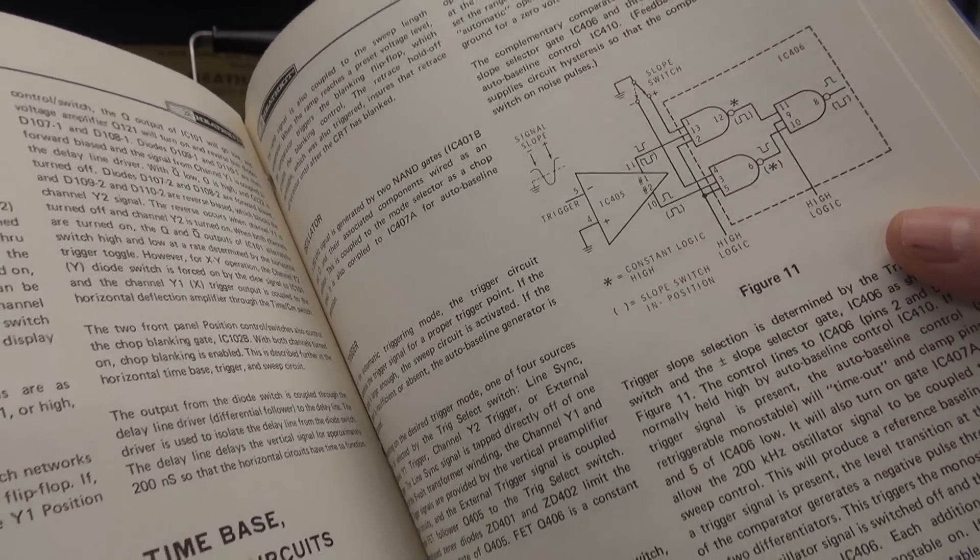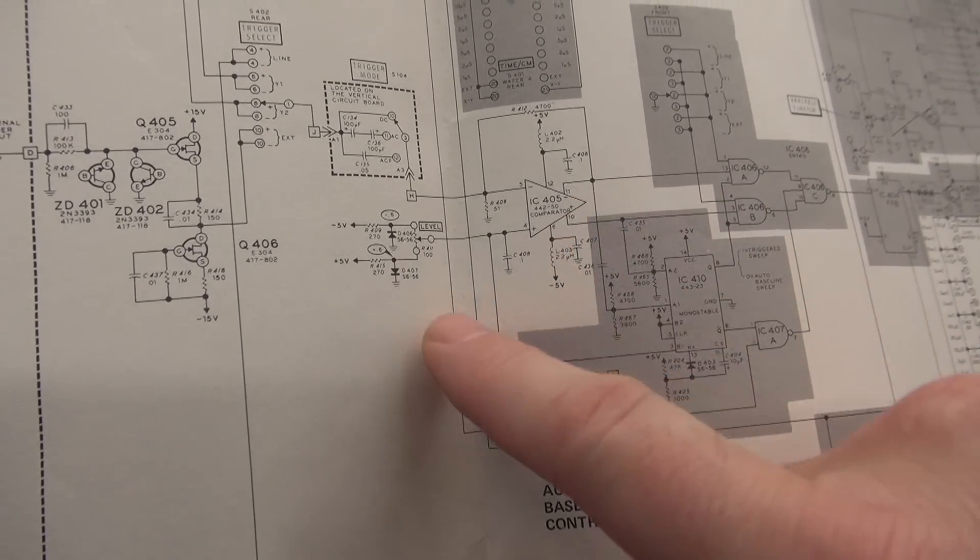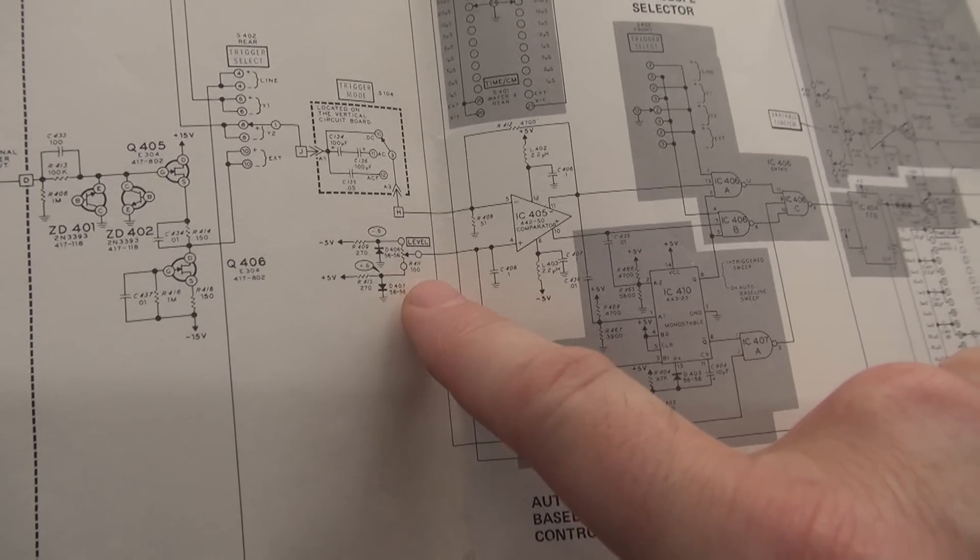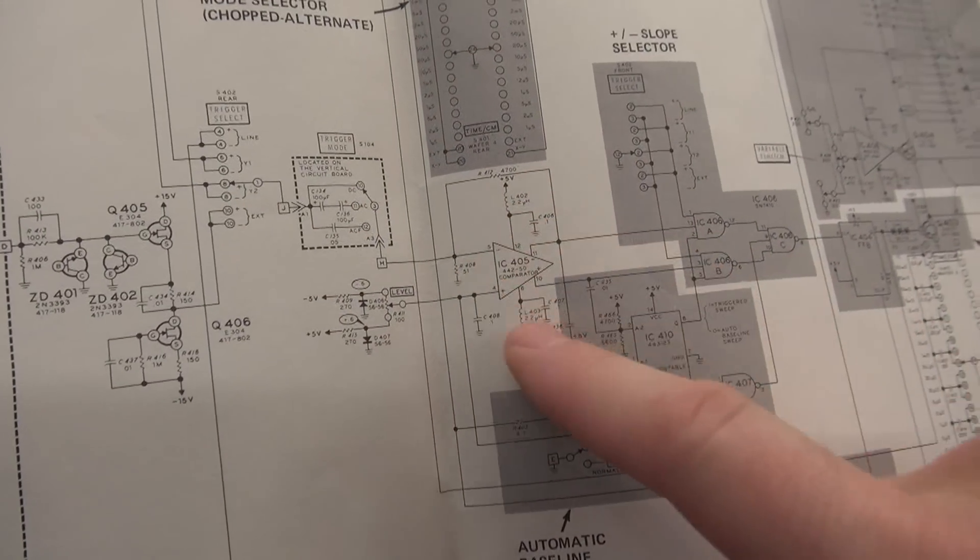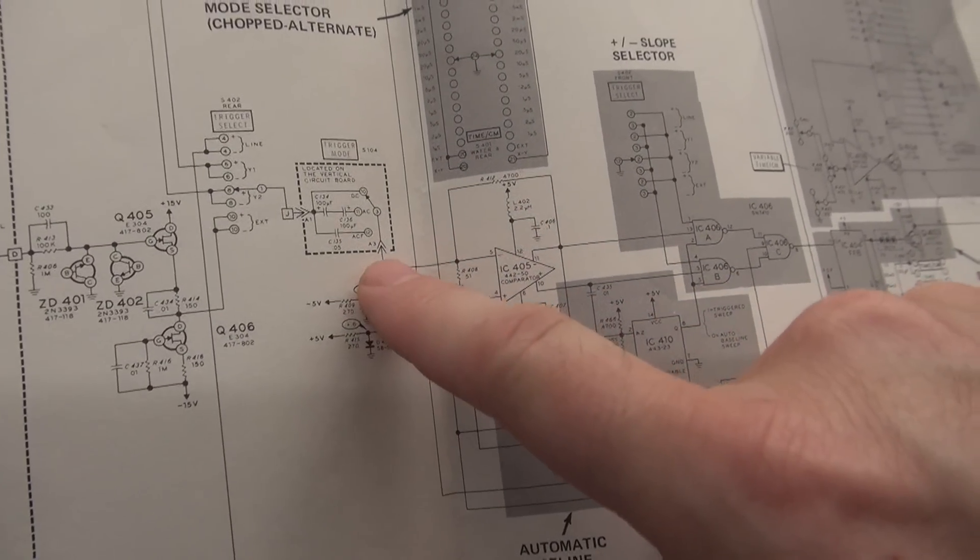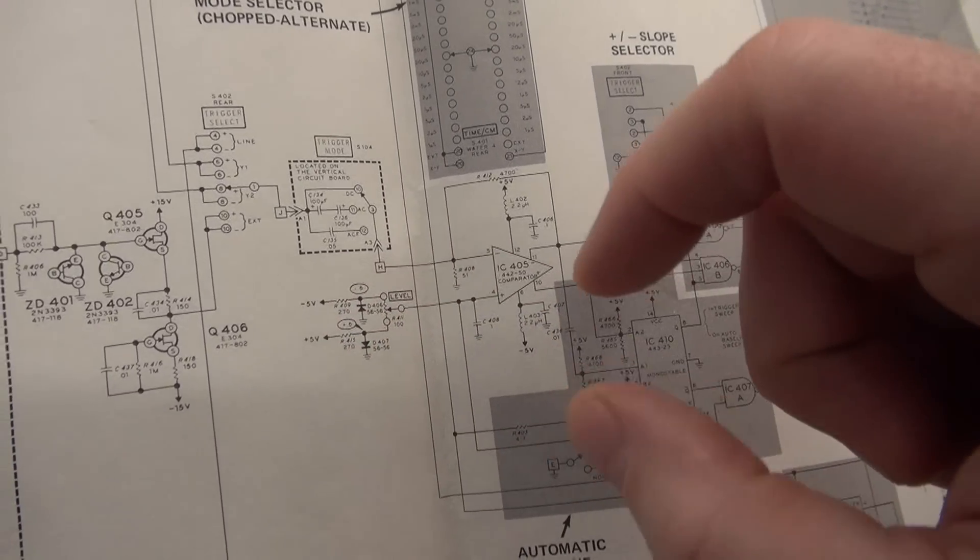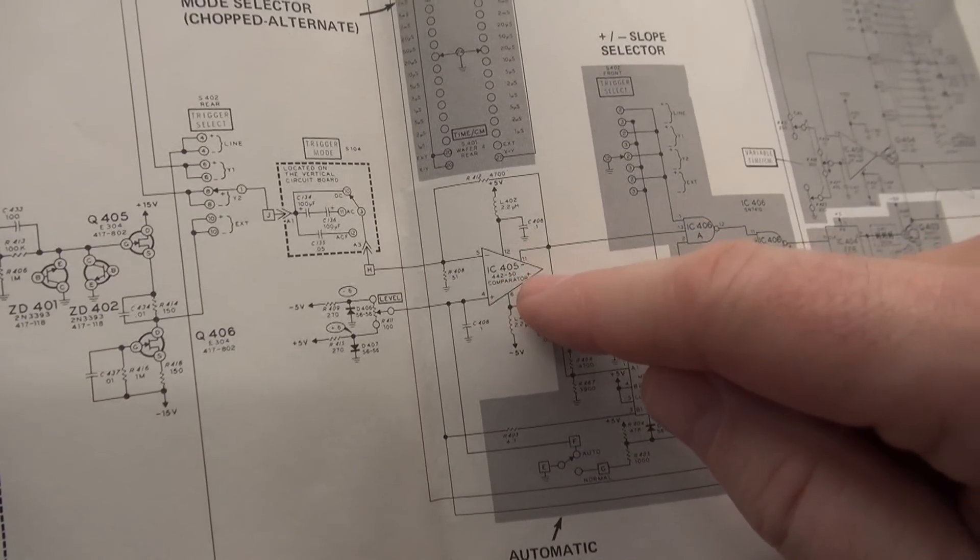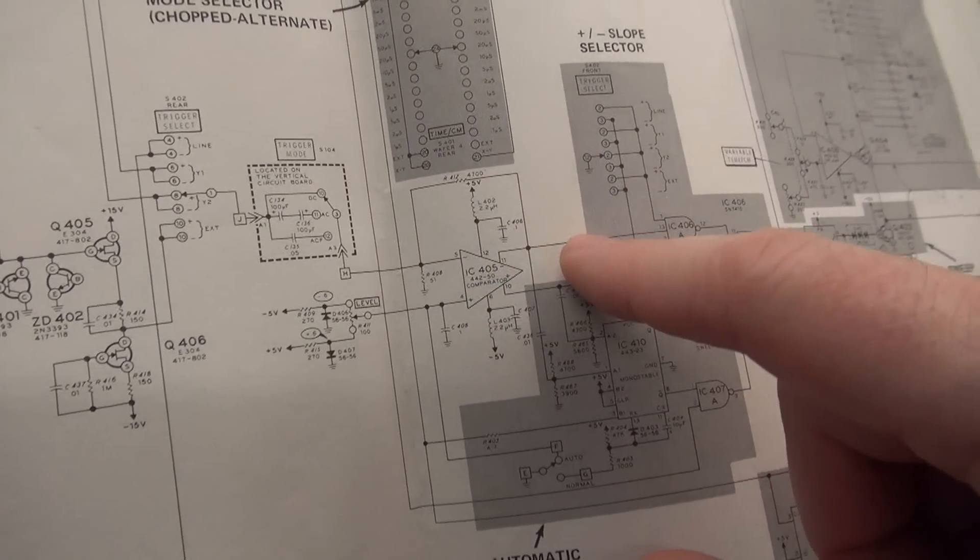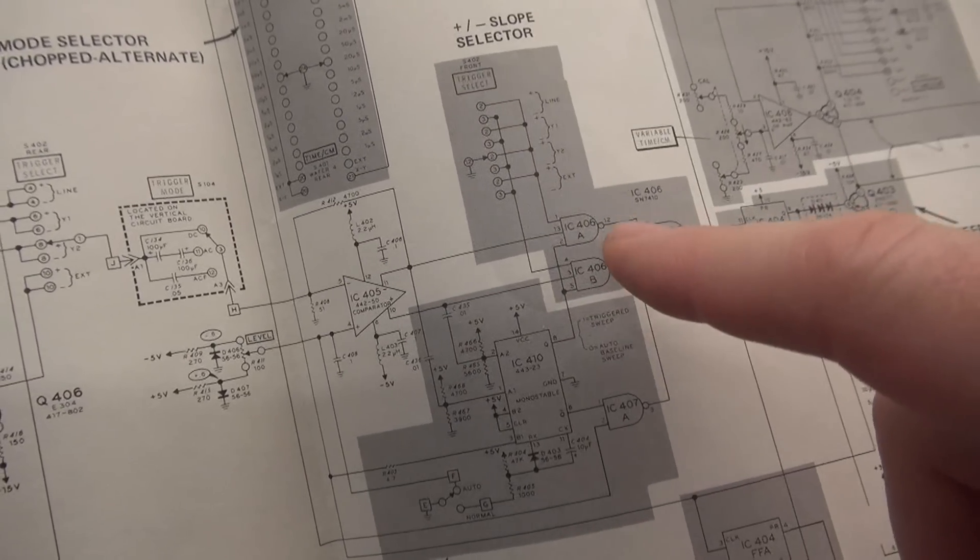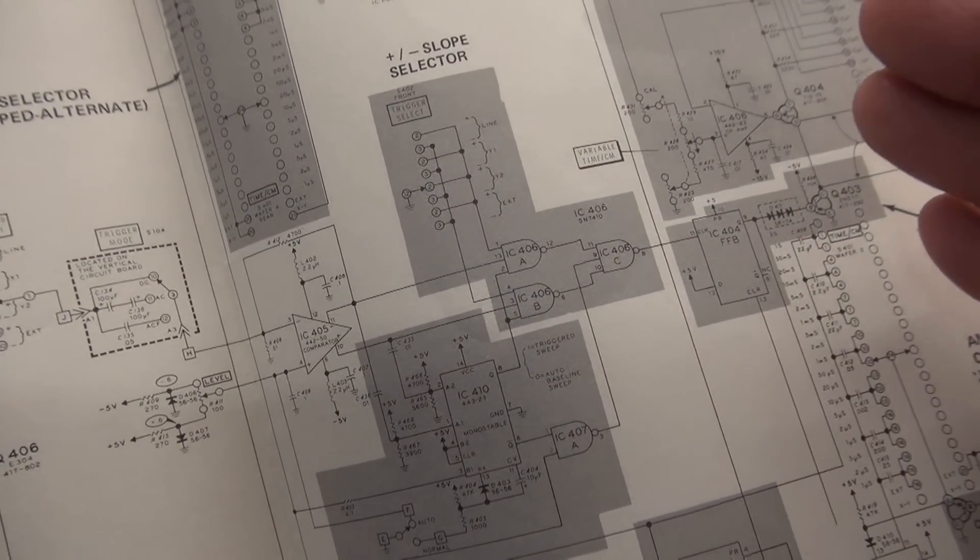Let's take a look at the schematic. Well, there is IC405. There is the level control. So it's taking your input. This is a comparator chip. It's looking at the signal coming in, and then you have an adjustable level that you spin the knob until this chip says, hey, that looks kind of where I want to be, and the output will toggle, goes through all these logic chipperinos, goes to the sweep circuit, and locks this thing in.